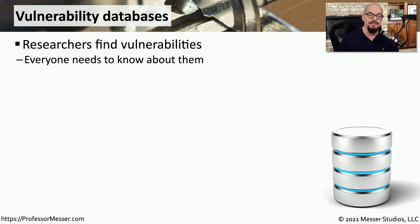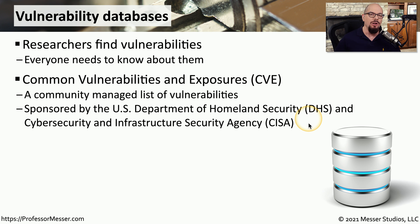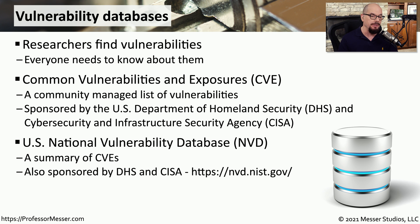A common source of threat intelligence are vulnerability databases. These are large databases that compile information coming from many different researchers. The researchers will find a vulnerability, report it into the vulnerability database, and then publish that database to everyone. One popular database is the Common Vulnerabilities and Exposures Database, or CVE. This is sponsored by the US Department of Homeland Security and the Cybersecurity and Infrastructure Security Agency. All of this information is compiled into a database that you can find online at the US National Vulnerability Database, or the NVD — a summary of all of the CVEs — and you can search and browse through that database to find vulnerabilities that may affect you.